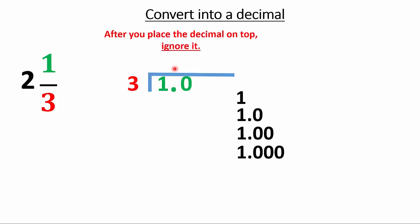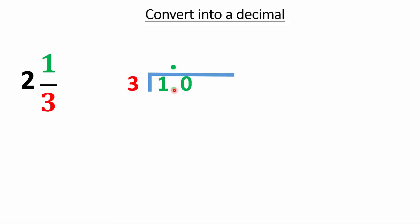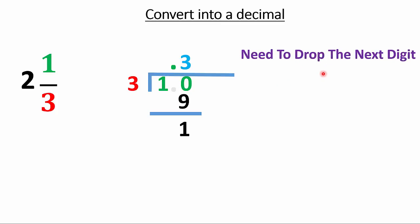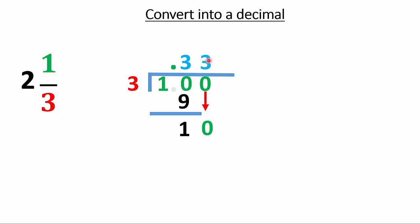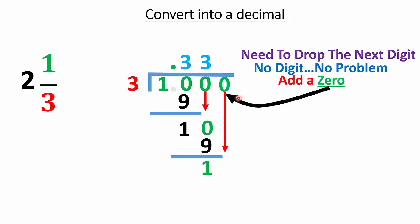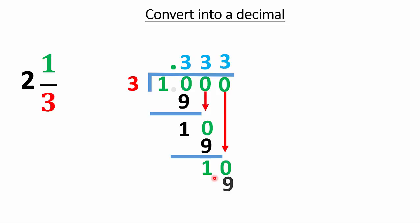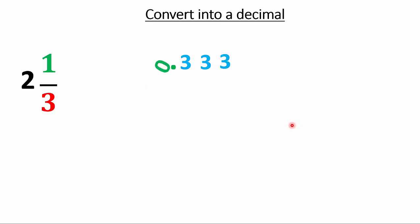Pop the decimal up and ignore the bottom decimal. Now: 3 goes into 10 three times because 3 times 3 is 9. Subtract to get 1 remaining. Add a zero, drop it down — we have 10 again. 3 goes into 10 three times, giving 9, remainder 1. A pattern is developing: it's going to be 0.3333... repeating forever.